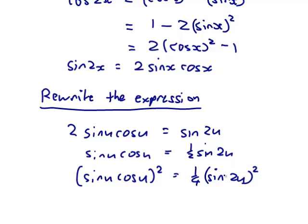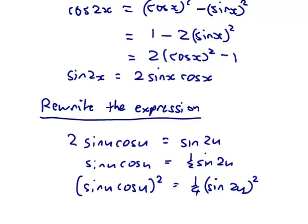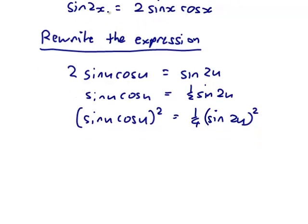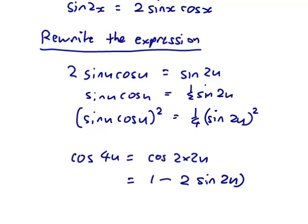Now we've got a sin squared. So this trig identity's got a sin squared in it and I can convert it to a cos. We're going to replace our x with 2u and so we'll get 2 times 2u and that would be 4u. So cos of 4u is cos of 2 times 2u. So that will be 1 minus 2 sin 2u squared.